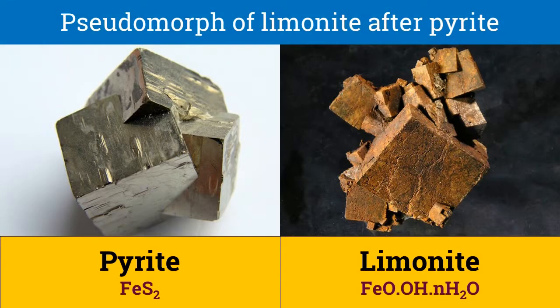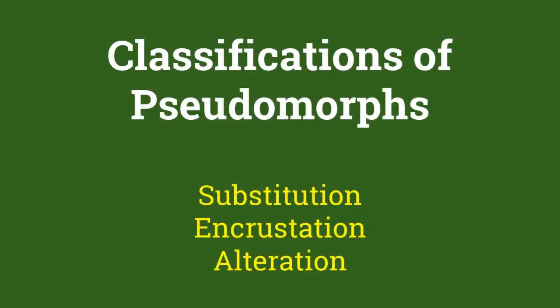When pyrite changes to limonite, the resulting pseudomorph is called a pseudomorph of limonite after pyrite. It can be seen that the external cubic feature has been preserved during the process of pseudomorphism. Pseudomorphs are usually defined according to the manner in which they are formed, which causes them to be classified as substitution, encrustation, and alteration.